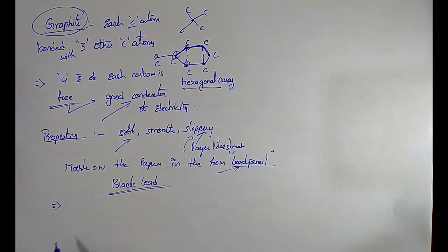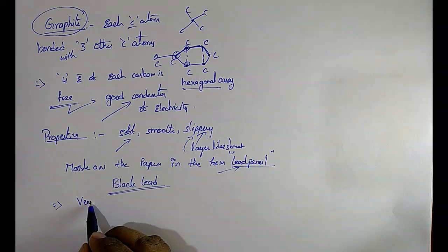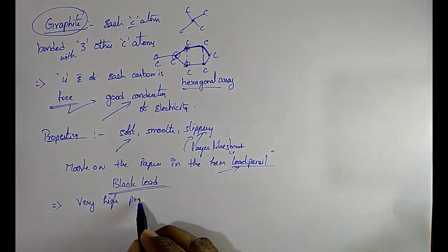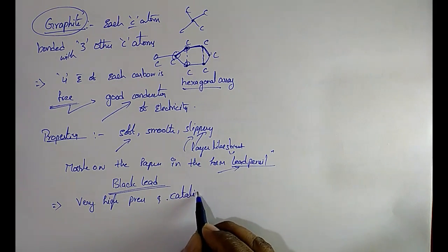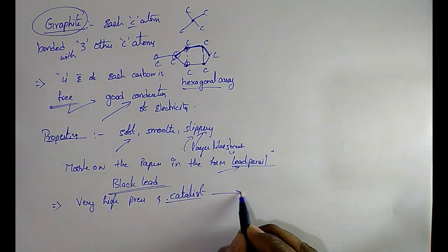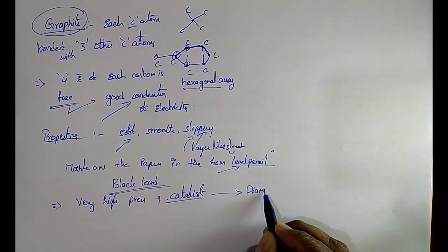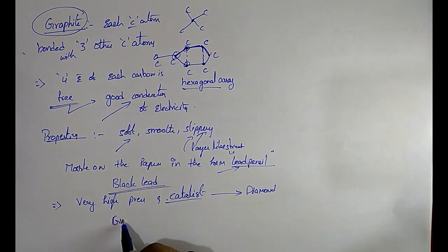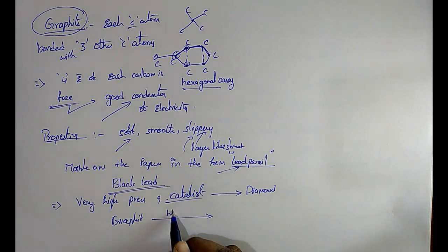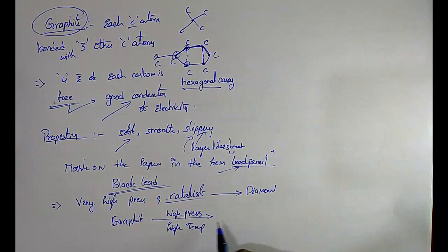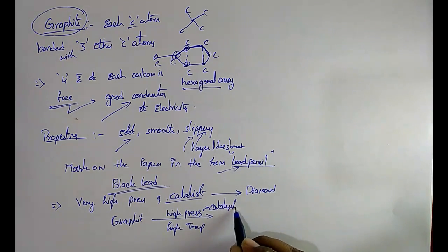An important point: on heating at very high pressure and in the presence of a suitable catalyst, graphite gets converted into diamond. But diamond may not be converted back to graphite.